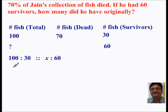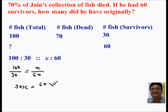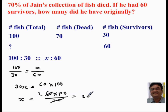Let's try and solve this, which is pretty easy. Starting with the fraction form: 100 over 30 equals x over 60. Which means 30x equals 60 times 100, or x equals 60 times 100 over 30. Canceling these two we get x as 200. So Jane had 200 fish originally.